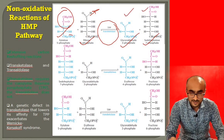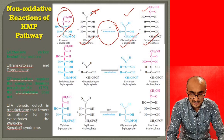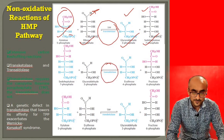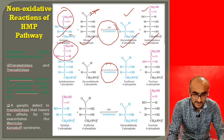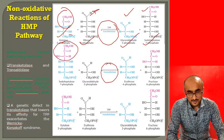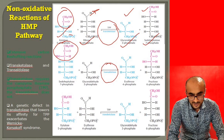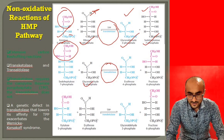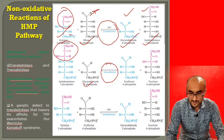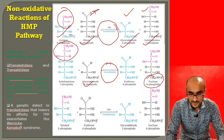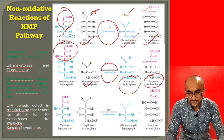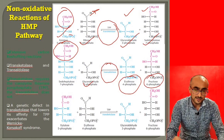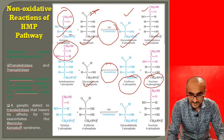In another reaction, sedoheptulose-7-phosphate and glyceraldehyde-3-phosphate react together in the presence of transaldolase. Transaldolase transfers a three-carbon fragment from the seven-carbon sedoheptulose-7-phosphate to glyceraldehyde-3-phosphate, producing the six-carbon sugar fructose-6-phosphate and the four-carbon sugar erythrose-4-phosphate.